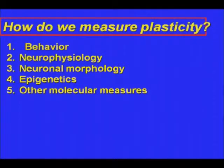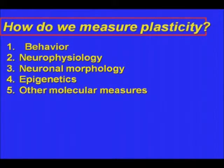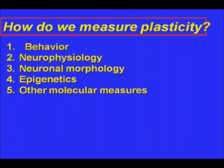How do we measure this? I'm just giving you an overview here. There are various ways of measuring it. The most difficult way — which you've just heard about in three of the previous talks — is behavior. There's no question that behavior is the hardest thing to measure. As we go down the list, things get a little bit easier. We can do it with neurophysiology, neuronal morphology, epigenetics, and other molecular measures.